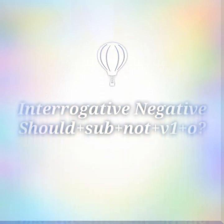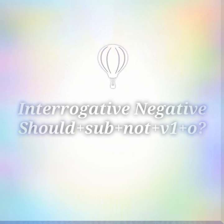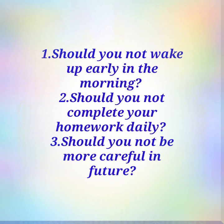Finally, let's move on to interrogative negative sentences. Put 'should', then the subject, then 'not', then the first form of the verb, then the object, and a question mark. Example 1: 'Should you not wake up early in the morning?' Example 2: 'Should you not complete your homework daily?' Example 3: 'Should you not be more careful in the future?' I hope you understood. Have a great time ahead!